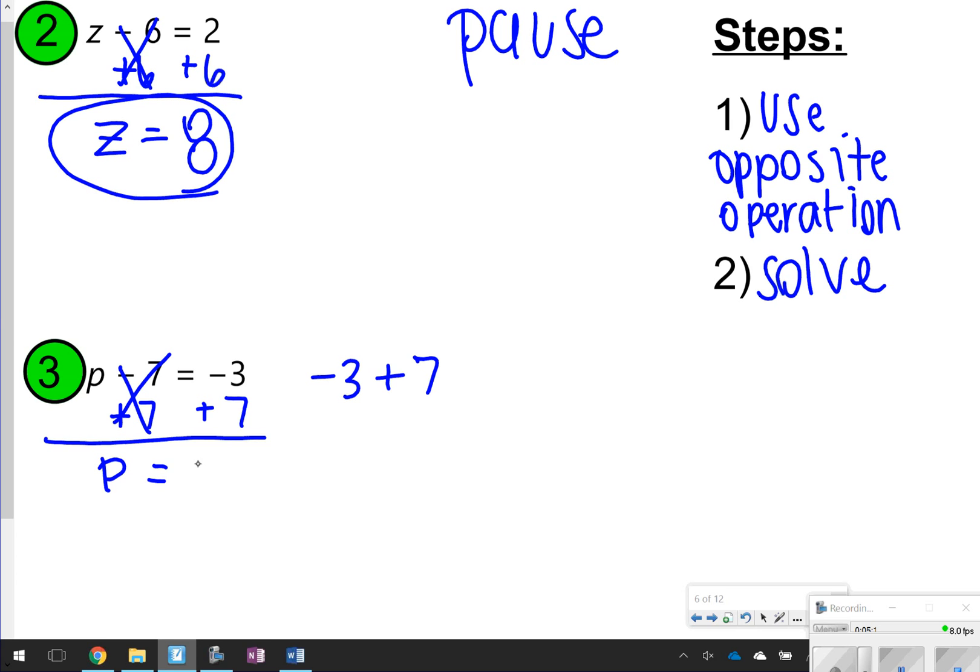Using your integer rules, I know that if I have different signs, I have to subtract. And then I keep the sign of the larger value. So 3 take away from 7 would be 4. And my answer would be a positive 4 because 7 is my largest value and it's positive. So my answer for number 3 is going to be p = 4. Again, you can check your work by plugging in 4 where p is. Is 4 take away 7, negative 3? It is because if I do 4 + (-7), we're adding the opposite, I still get -3.